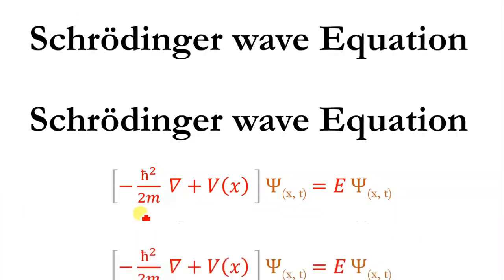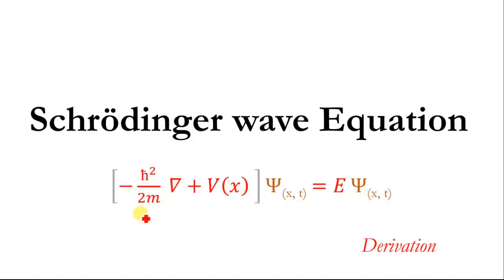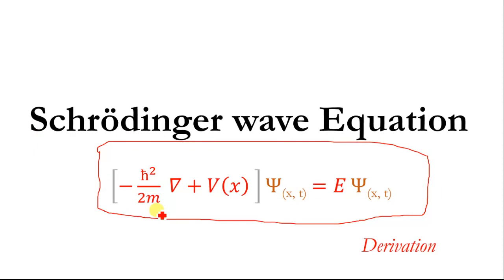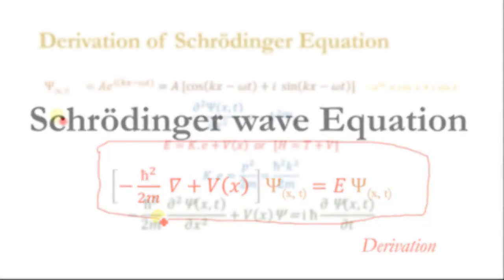Schrödinger wave equation. The Schrödinger wave equation gives us information about the quantum world, and this is the mathematical form of the Schrödinger wave equation. Today we will derive the Schrödinger wave equation.